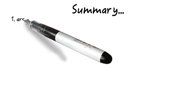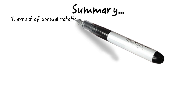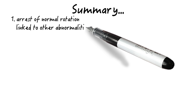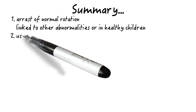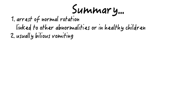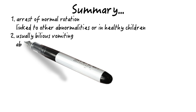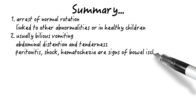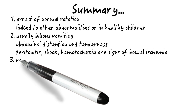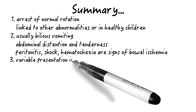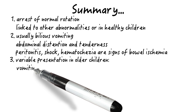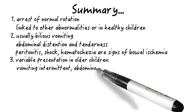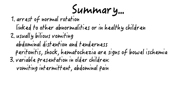In summary, here are the key takeaway points. 1. Rotational anomalies occur as a result of an arrest of normal rotation of the embryonic gut. They can be associated with other abnormalities but also occur in otherwise healthy children. 2. Vomiting, which is usually bilious (green-like), is the most common presenting symptom of malrotation in infancy, often accompanied by abdominal distension and tenderness. Peritonitis, shock, and/or hematochezia represent signs of bowel ischemia in patients with volvulus. 3. The presentation in older children is variable and often insidious; they may present with acute onset of bilious vomiting or more often with intermittent vomiting or abdominal pain.